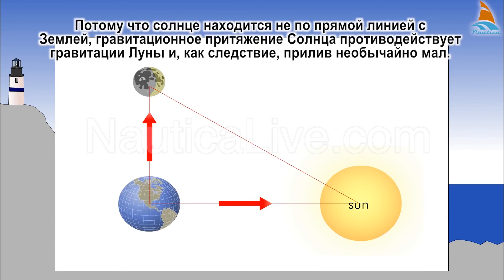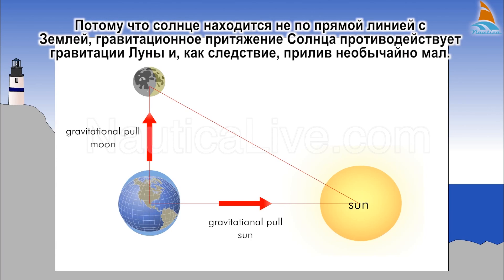Because the sun is not in a straight line with the earth, the gravitational pull of the sun counteracts the gravitational pull of the moon, and as a result the tidal range is unusually small.